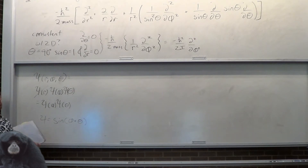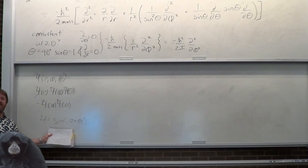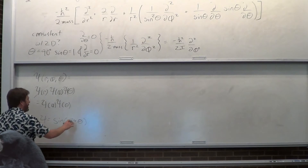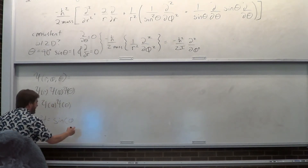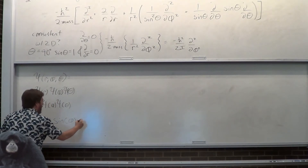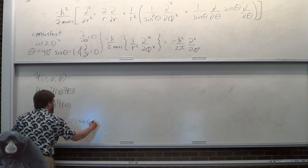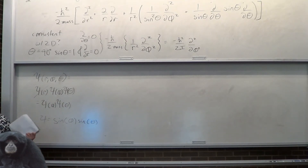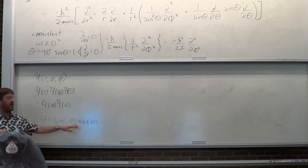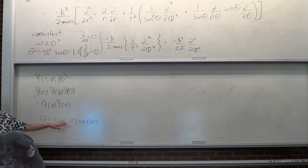Trust me, you don't want a non-separable form. You think this stuff is hard? I have no idea what to do with that. If separability is true, a joint function of theta and phi is not allowed, but a product Θ(θ)·Φ(φ) would be. This is unbelievably easier to work with.